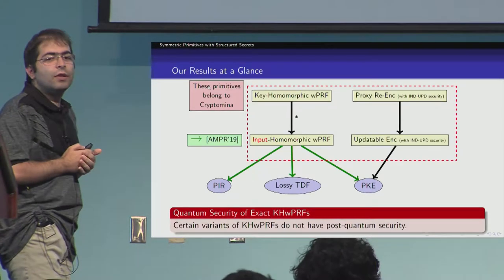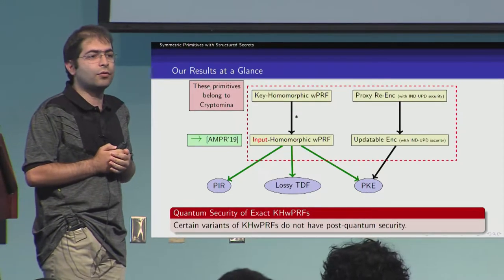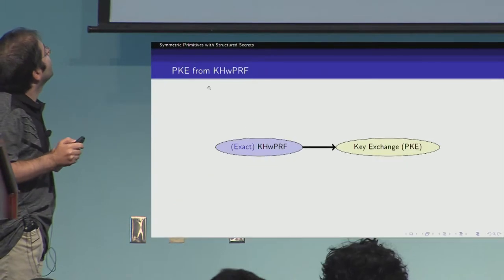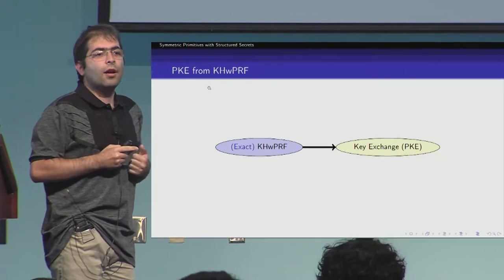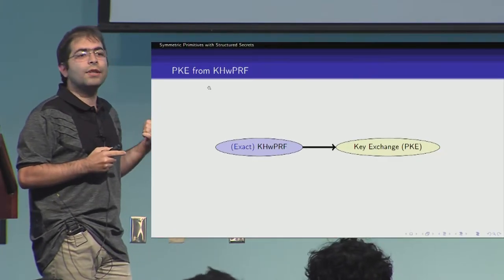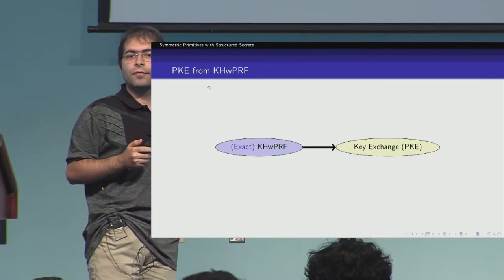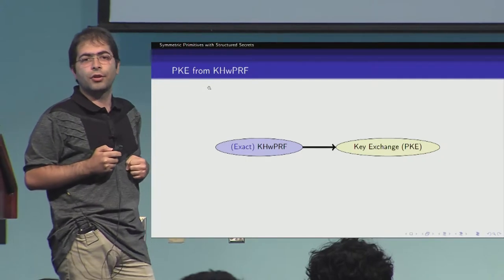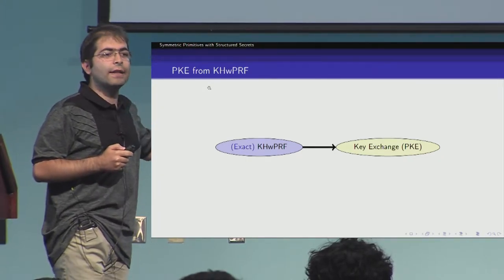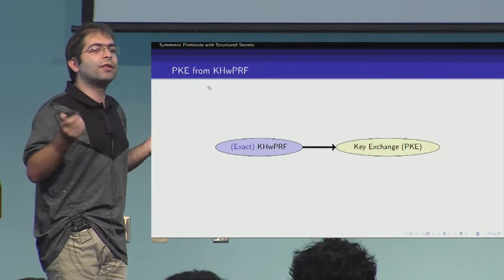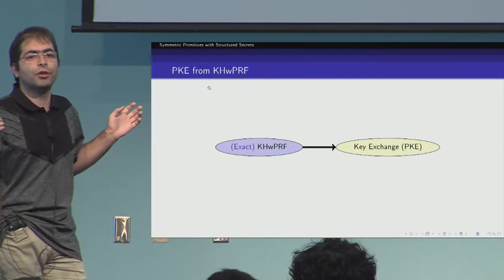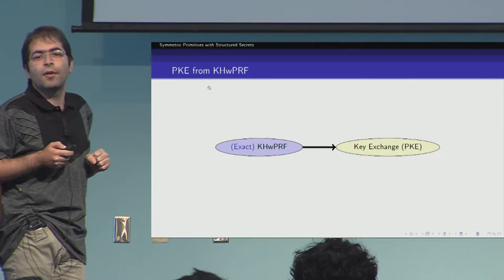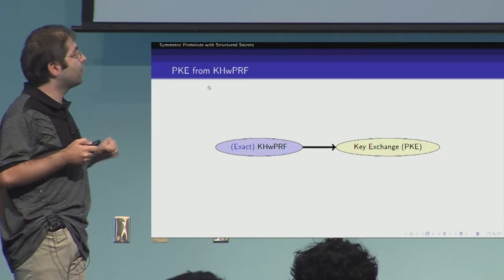In addition, we show that certain variants of keyhomomorphic weak pseudo-random functions do not have post-quantum security. For the rest of the talk, I'm going to focus on this particular result: how to get a key exchange protocol — which is sufficient to realize PKE — from an exact keyhomomorphic weak pseudo-random function. The ideas for this construction and its proof can be used in similar ways to construct a variety of primitives such as trapdoor functions or PIR.